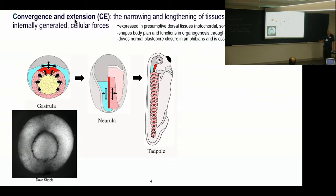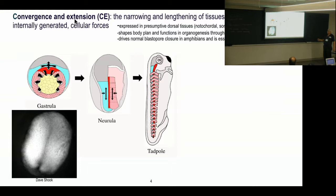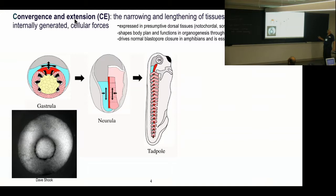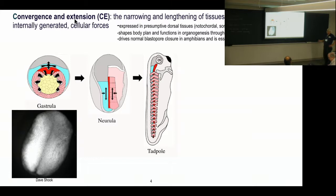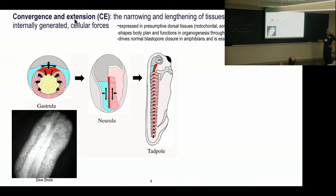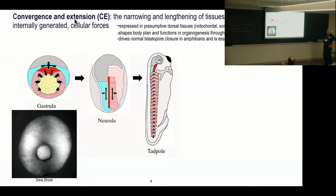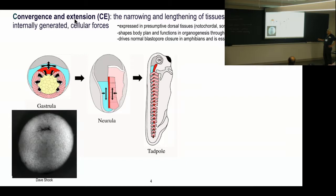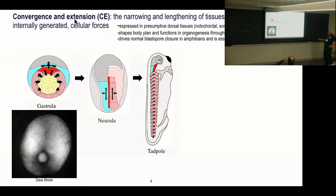So, the one I'm going to talk about is convergent extension first, and then we'll discuss some others. Now, this machine moves a great deal. It's a single main engine of gastrulation and early body coordination. What happens is this marginal zone here, red, rolls inside, or involutes, the notochord up here and the presumptive somite mesoderm here. And as it involutes, it undergoes what we call convergence and extension. And this is a narrowing lengthening of tissues. In this case, it's by internally generated forces.